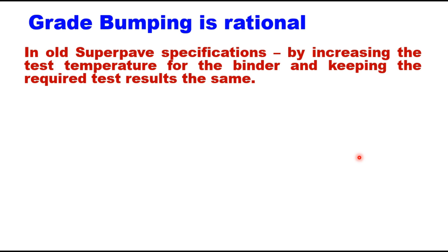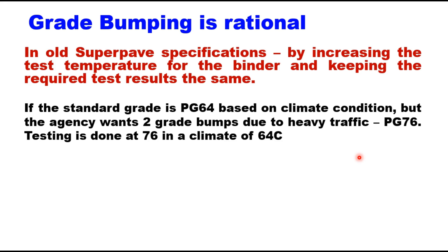Under the old system, if the standard grade is PG 64 based on climate and an agency wants two grade bumps due to heavy traffic, they would specify a PG 76. This required testing at 76°C for a 76-22 binder in a 64°C climate. Truly speaking, the pavement will never see this high temperature — it is just an artificial way of requiring a stiffer binder by testing at a higher temperature.